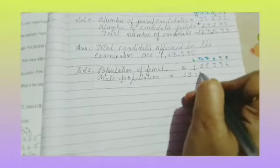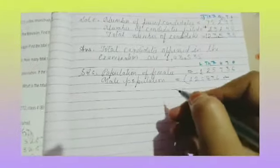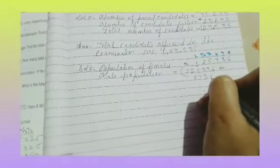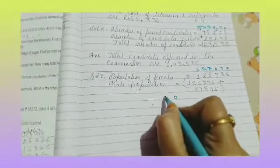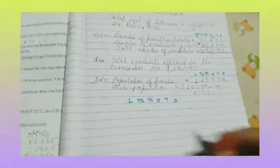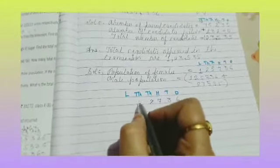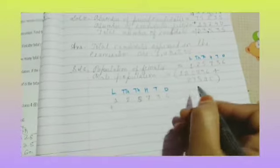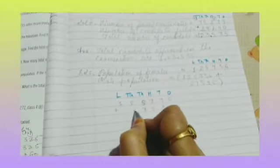Male population equals one lakh twenty-five thousand seven hundred and thirty-six, plus twenty-seven thousand five hundred and ninety-five — because the male population is 27,595 more. So we add up: digits are 6, 3, 7, 2 and 5, 9, 5, 7, 2.